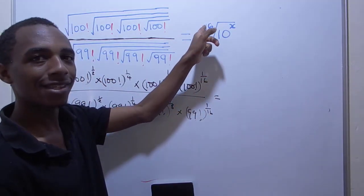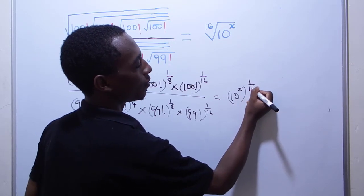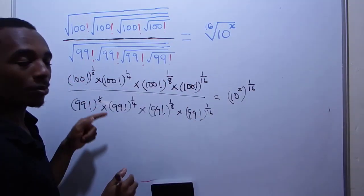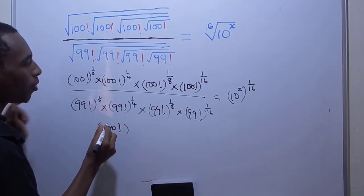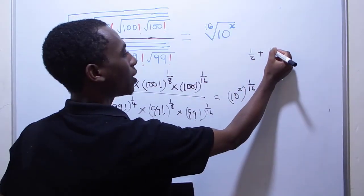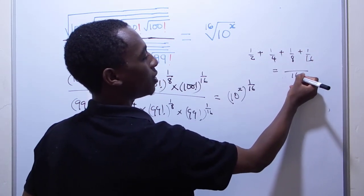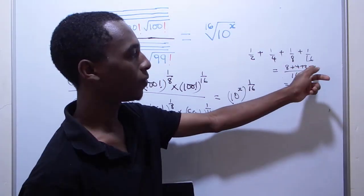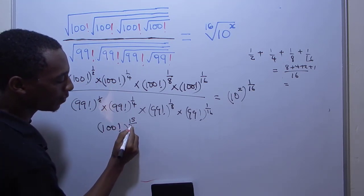This last one is the 16th root of 99 factorial to the power 1 over 16. Now, we have the same base, which means I can just add up the powers. So I can write this as 100 factorial to the power — let's add the powers: 1 half plus 1 quarter plus 1 over 8 plus 1 over 16. That's 8 plus 4 plus 2 plus 1 over 16, which equals 15 over 16.